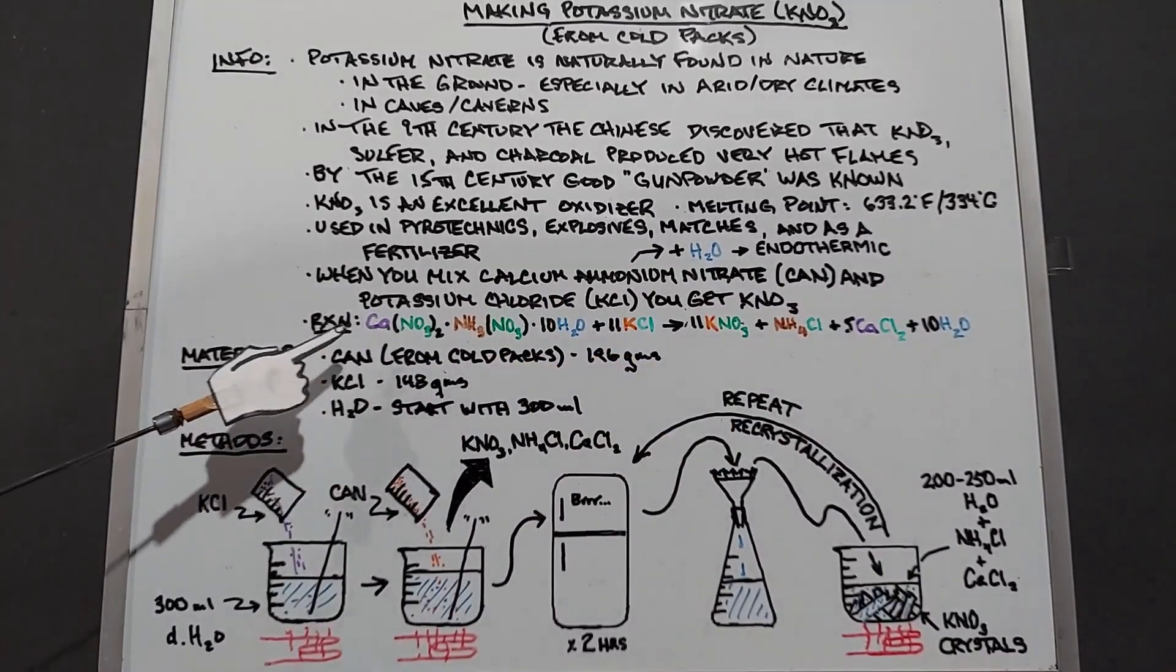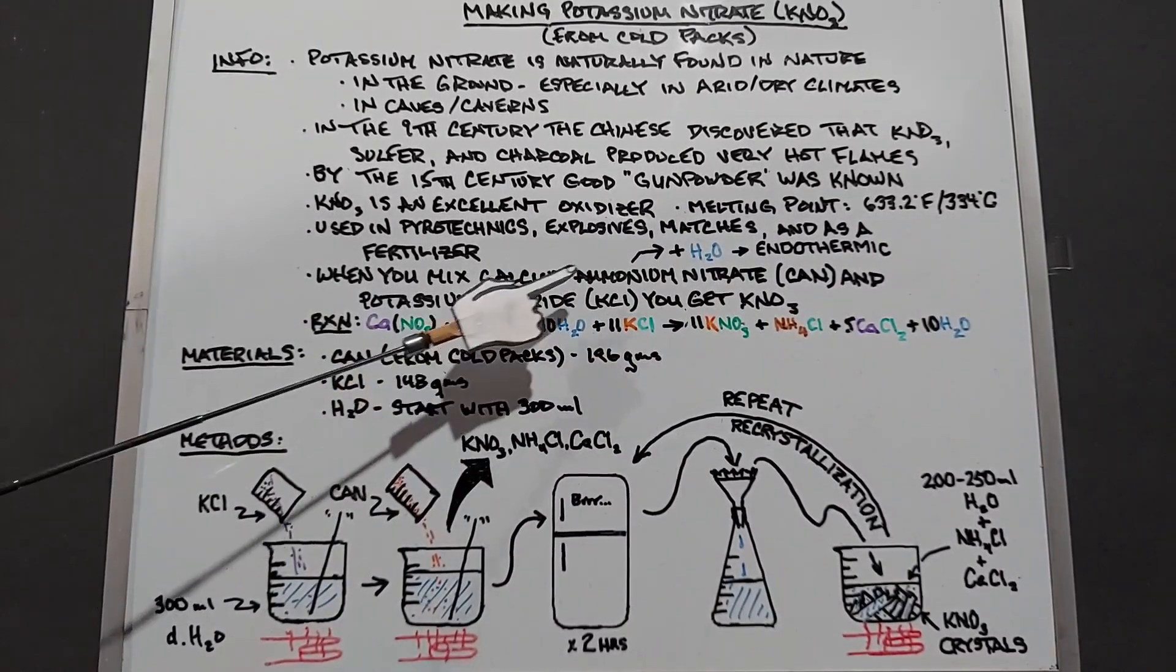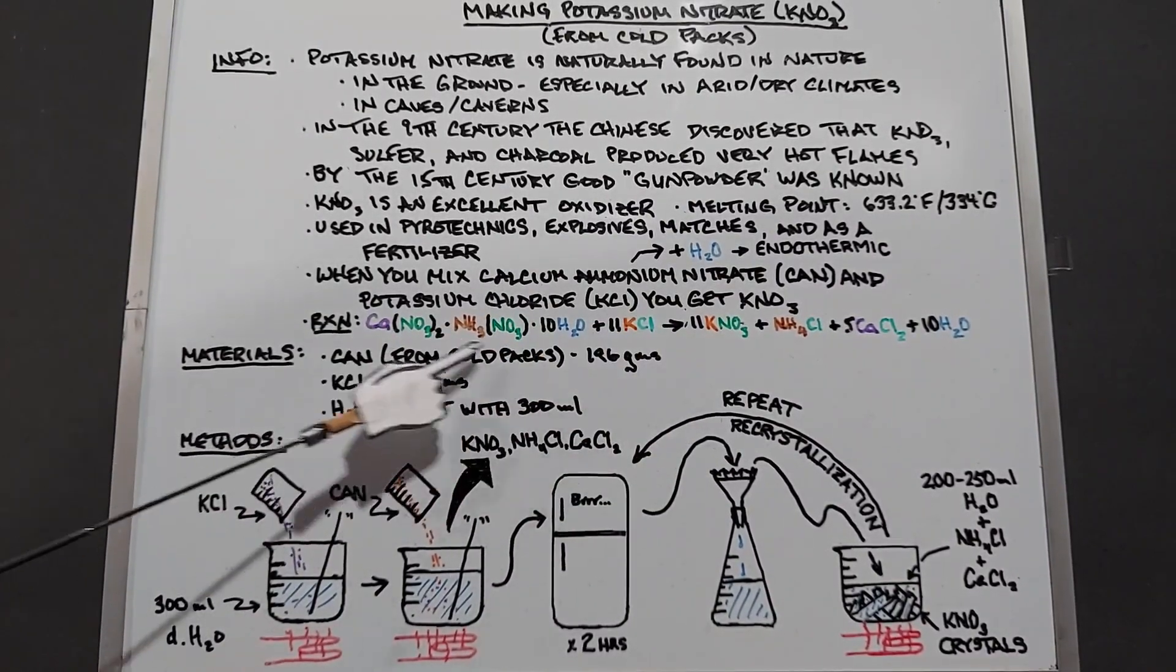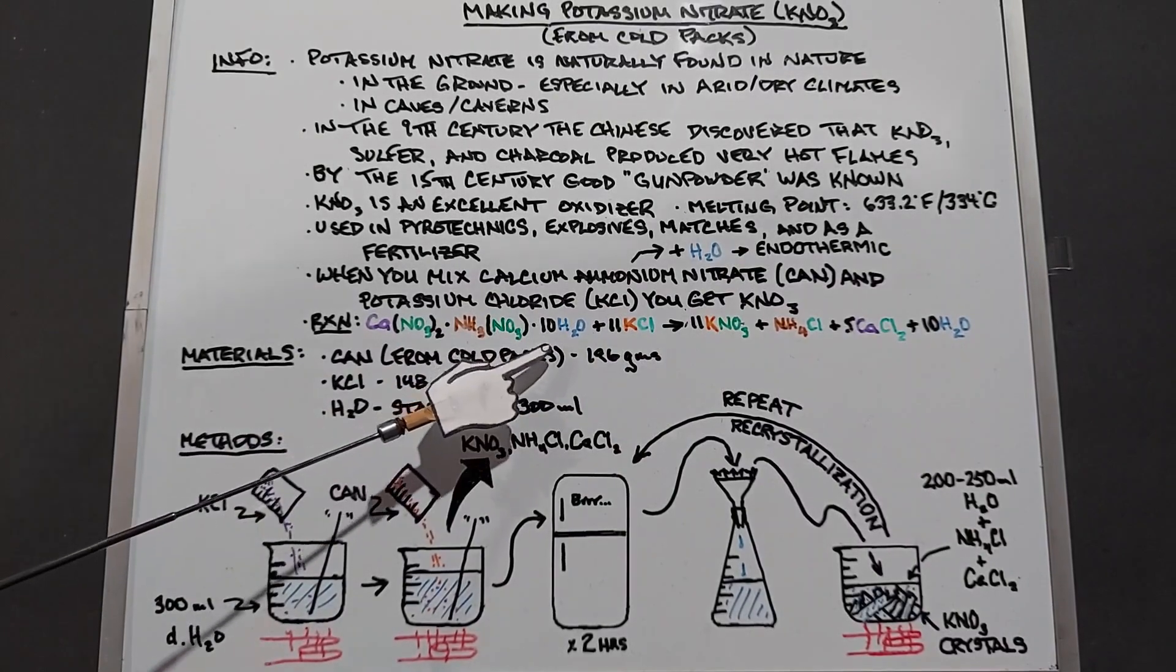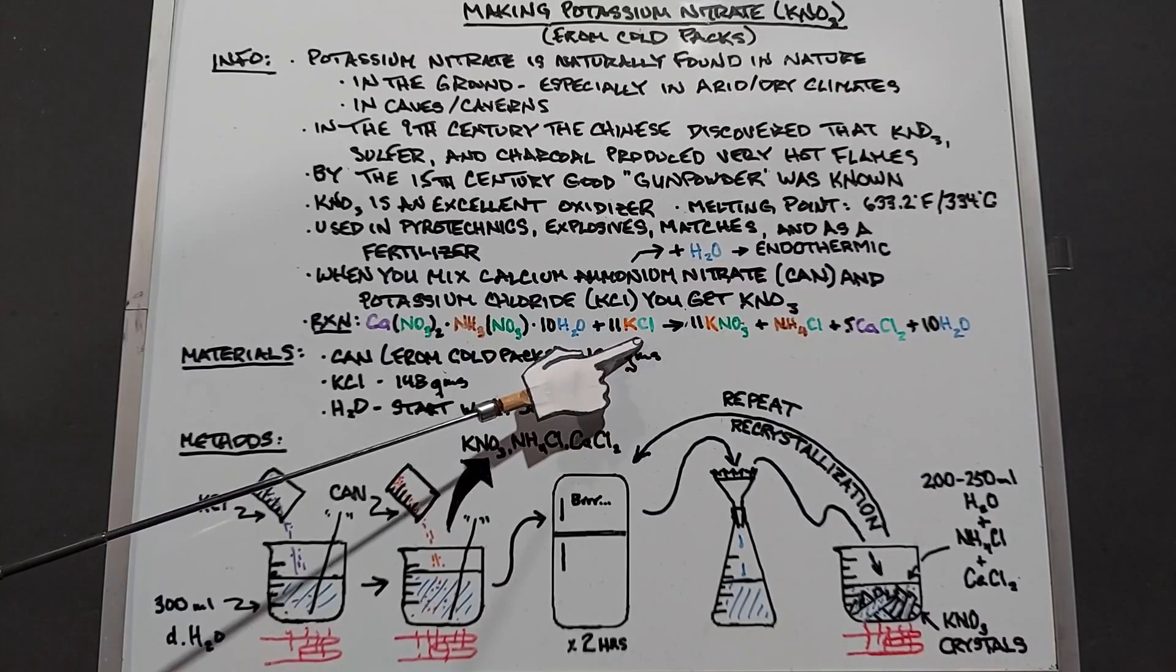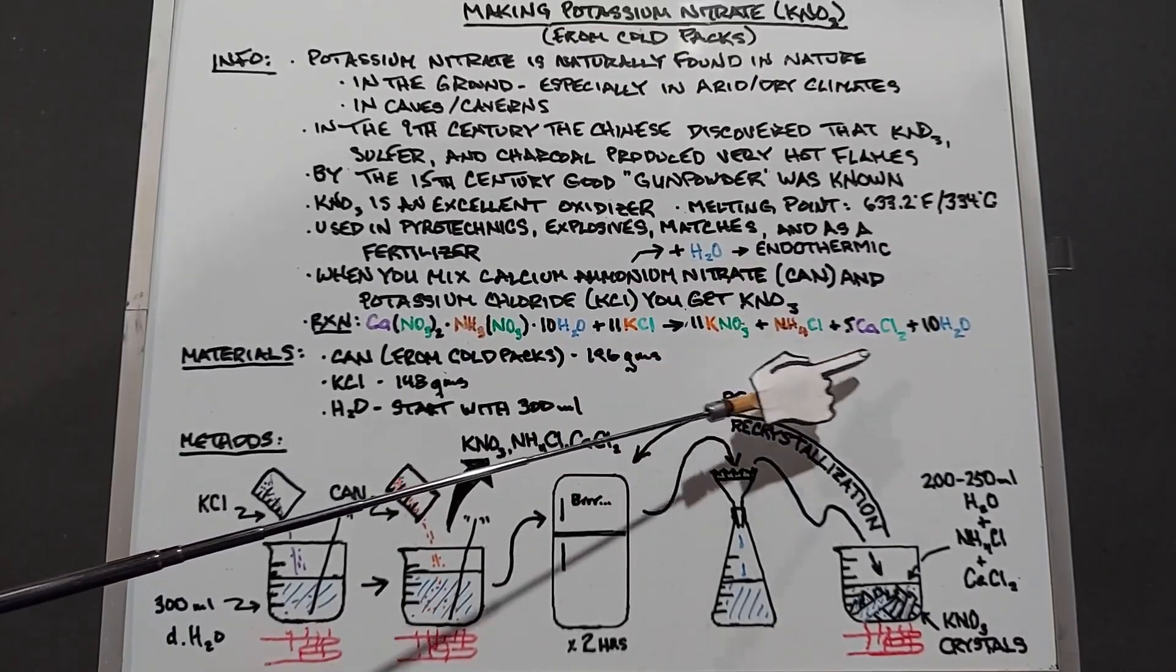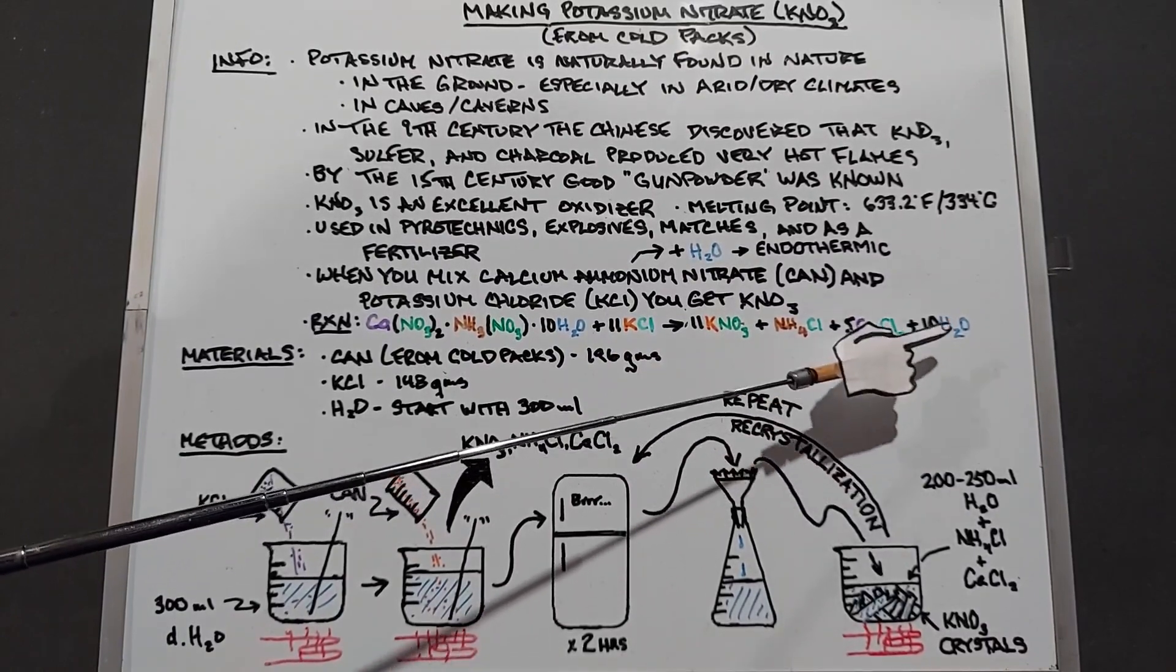The full reaction: you have your calcium nitrate and your ammonium nitrate, also known as calcium ammonium nitrate. They're a combined salt here that comes with 10 waters, plus 11 KCl potassium chloride, will give you 11 potassium nitrate plus the salts ammonia chloride and calcium chloride plus some water.